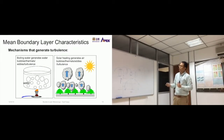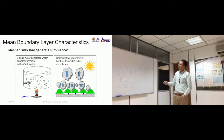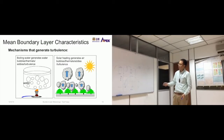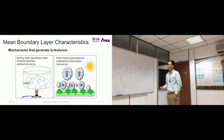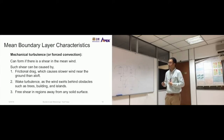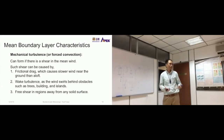Boiling water generates bubbles, thermals, eddies, and turbulence — and you can use the same analogy for the atmosphere: solar heating generates air bubbles, thermals, eddies, and turbulence. Smaller packets form at the bottom and combine at about one kilometer up in the atmosphere. Now we talk about mechanical turbulence.